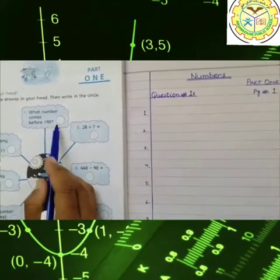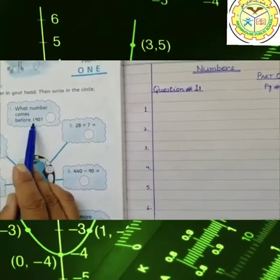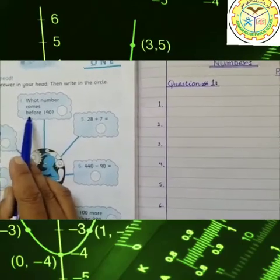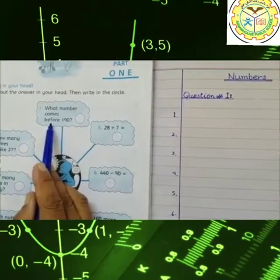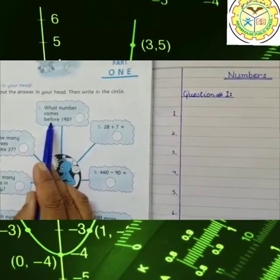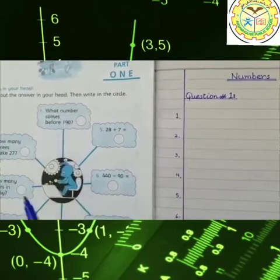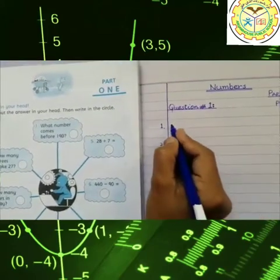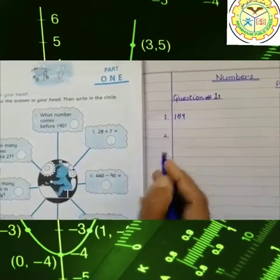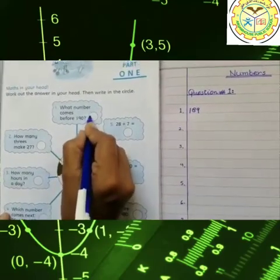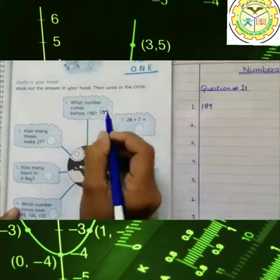You can solve these questions and after that you write these answers in these circles. Our question number one is: what number comes before 190? Before means 190 se pehle konsa number aata hai. You have to think in your mind. In previous classes you studied this. Now think, 190 se pehle konsa number aata hai? Good, 190 se pehle humare paas aata hai 189.